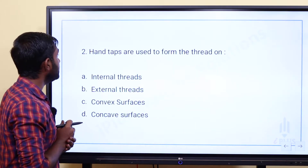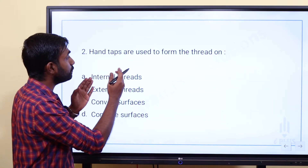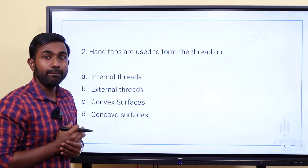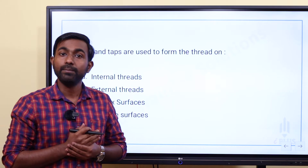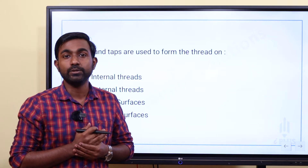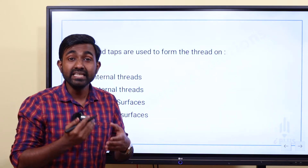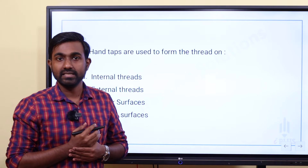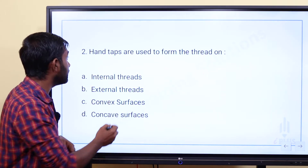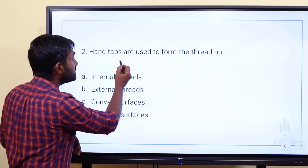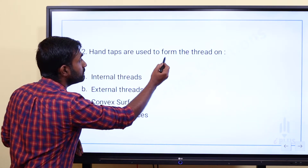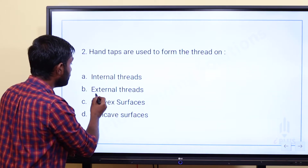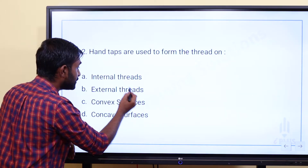The next question: Hand Taps are used to form the thread on — blank. Internal threads are used to form the thread. Option A is internal thread. Option B is external thread. Option C is convex surfaces. Option D is concave surfaces.